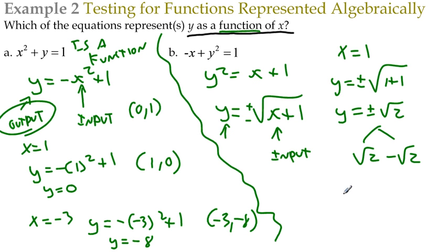Wait a minute. I plugged in 1 and output root 2, and I plugged in 1 and out came negative radical 2. By definition of a function, every x value should only go to one y value. But the same x value went to two different y values. So this one would not be a function.